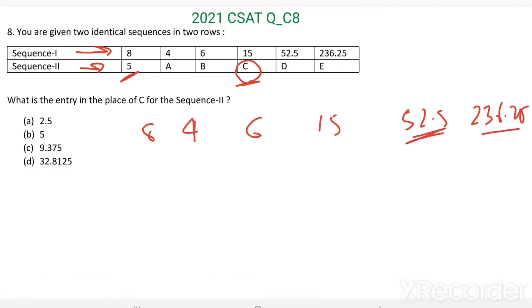Here decimals are involved, that means we can consider the chances of multiplication and division involved in this sequence. 4 divided by 8 is equal to 1/2, this is equal to 0.5.